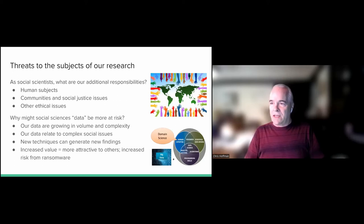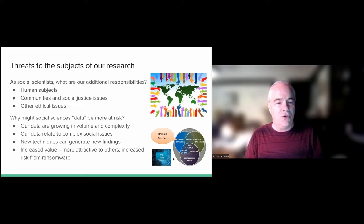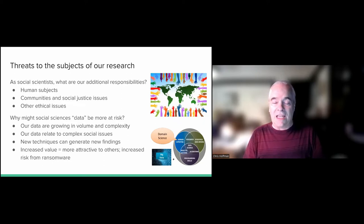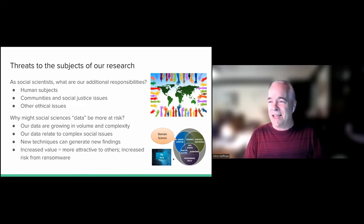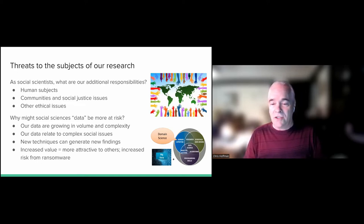I'd like to consider why social science data may be more at risk. These days, social scientists are working with larger data sets, more complex data sets, data sets that relate to very sensitive kinds of issues. We're also developing new techniques out of data science and other fields — machine learning, etc. — that allow us to generate new findings and work with larger data sets. Because these findings and these data are generating more valuable and more impactful results, they're more attractive to bad actors. And because these data are of value, they're also at risk to ransomware — if somebody encrypted your data, you might be willing to pay to get it back.